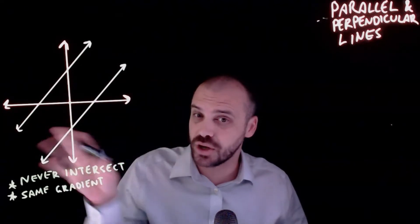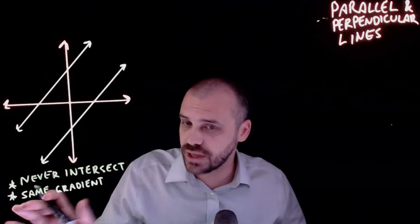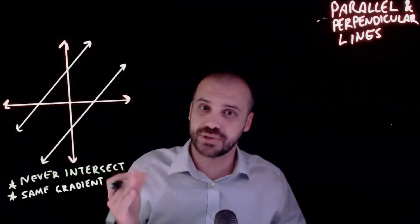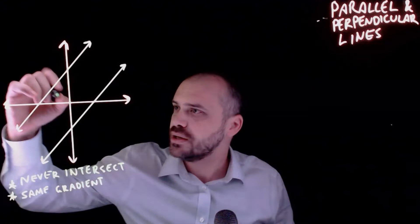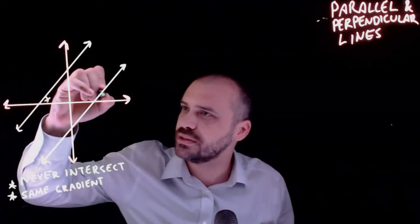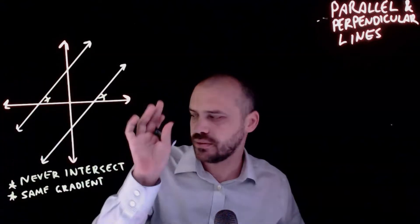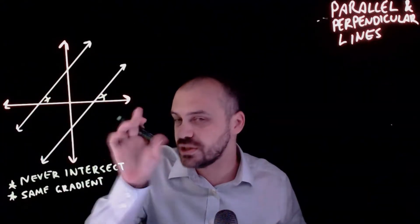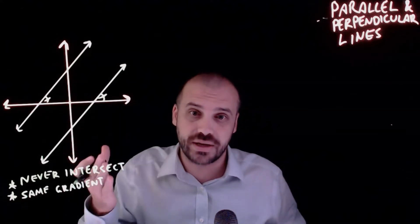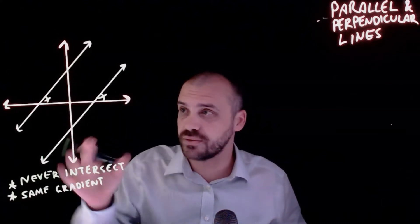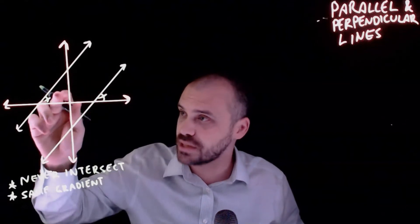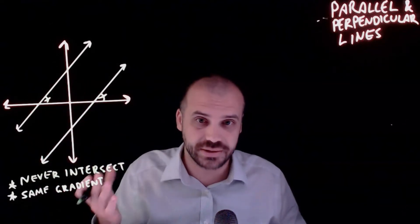I could spend a bunch of time proving to you that they have the same gradient, but you can definitely see that they have the same slope. This angle here is equal to this angle here. The definition of gradient is m equals tan θ, so these must have the same gradient because they make the same angle with the x-axis.